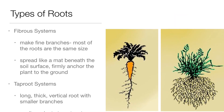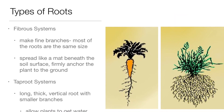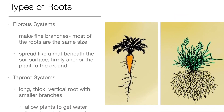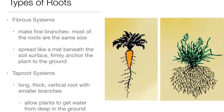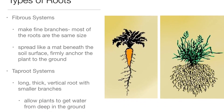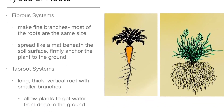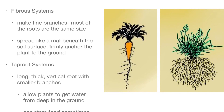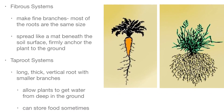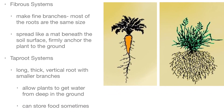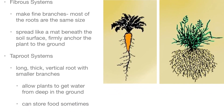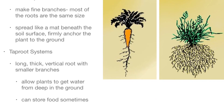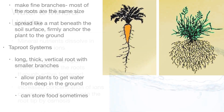Types of roots: fibrous root systems make fine branches where most roots are the same size, spreading like a mat beneath the soil surface to firmly anchor the plant to the ground. Taproot systems have a long, thick vertical root with smaller branches, allowing plants to get water from deep in the ground and sometimes storing food.